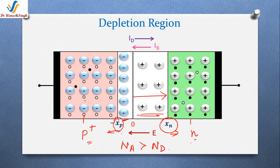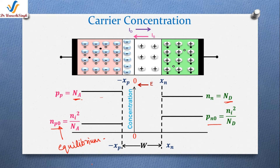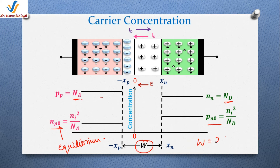In this figure, xp is the width of the depletion layer at the p side and xn at the n side. Examining the carrier concentration for the case where the p side is heavily doped: na is at a higher level compared to nd. np0 and pn0 are the minority carrier concentrations, calculated using the mass action law, where zero signifies the equilibrium condition. Since the p side is heavily doped, na is greater than nd, and minority carriers are accordingly lesser on the p side. The total width w equals xn plus xp.